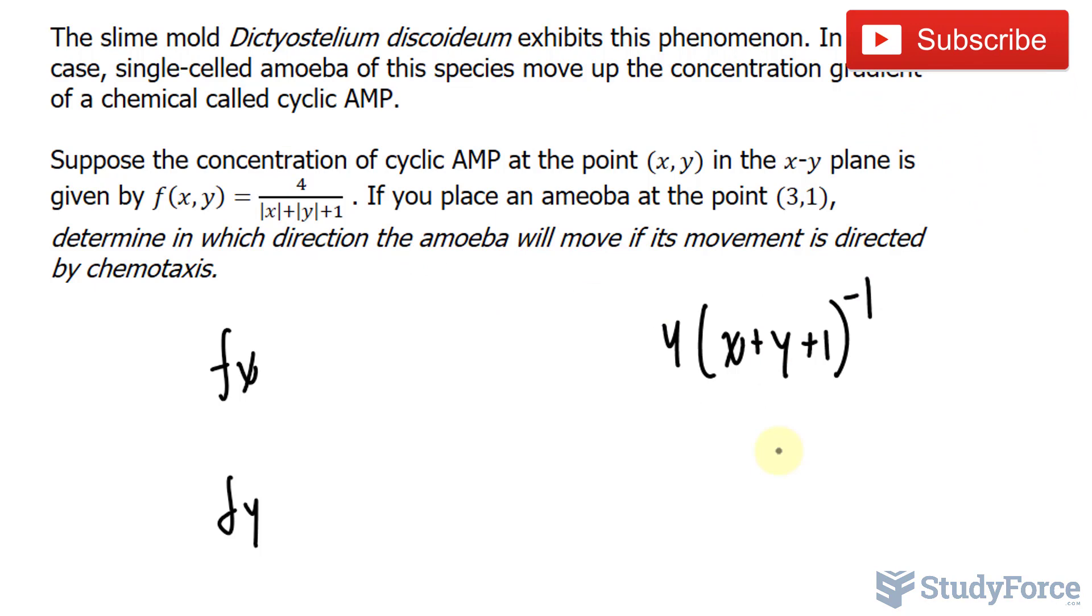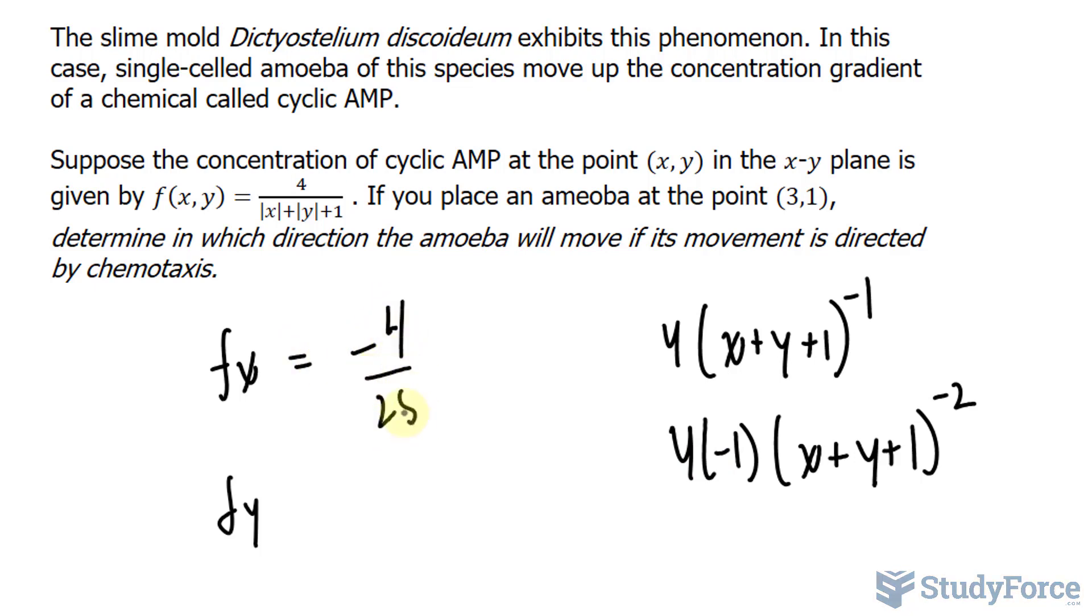Taking the derivative of this, remember y and 1 are constants. So we use the power rule, 4 times negative 1, x plus y plus 1, subtracting that by 1, it's negative 2. Evaluating this at (3,1), you should get negative 4 over 25.